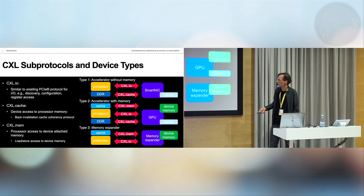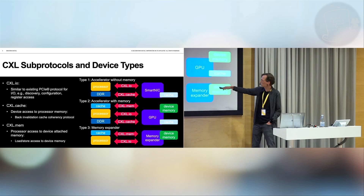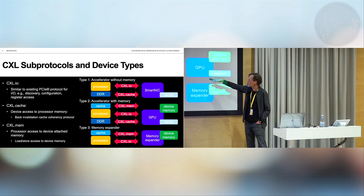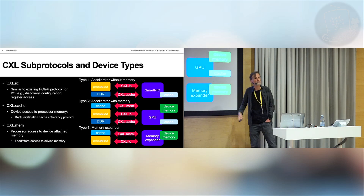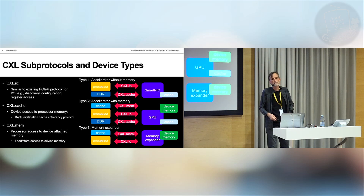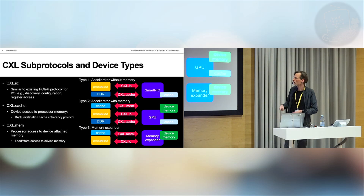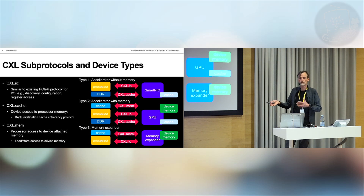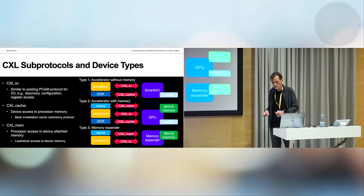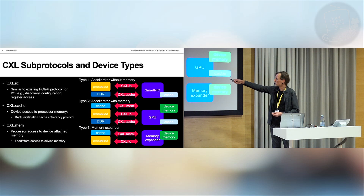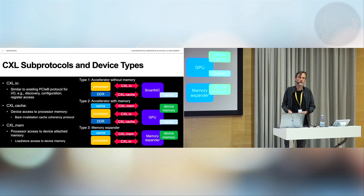The second type, Type 2, is accelerators with memory — one example being a GPU. As before, you can have the GPU accessing data on the CPU-attached memory using CXL I/O. And then you have CXL.mem, which is a protocol for allowing the processor to access device memory coherently.